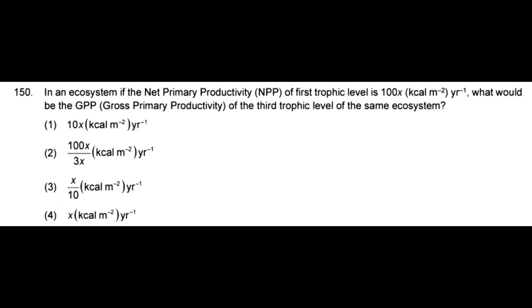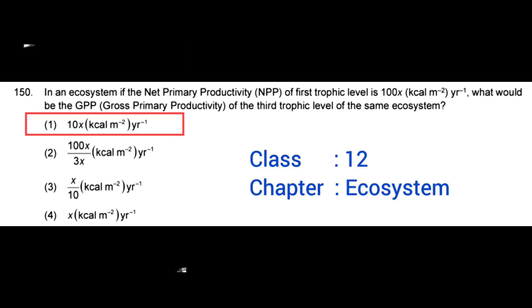In an ecosystem, if the net primary productivity of the first trophic level is 100X kcal m⁻² yr⁻¹, what would be the gross primary productivity (GPP) of the third trophic level of the same ecosystem? Correct answer: option 1, 10X kcal m⁻² yr⁻¹.